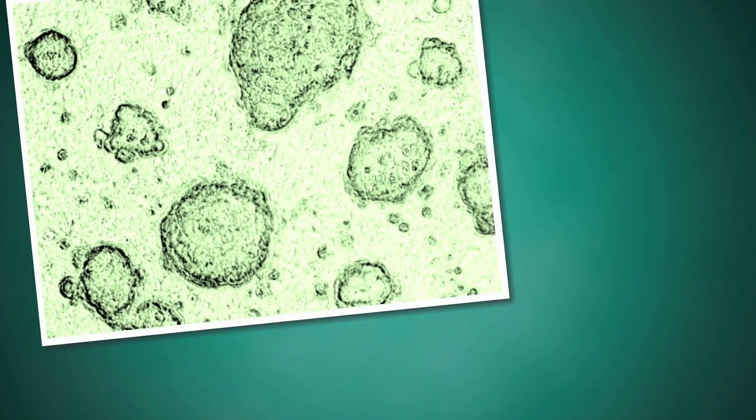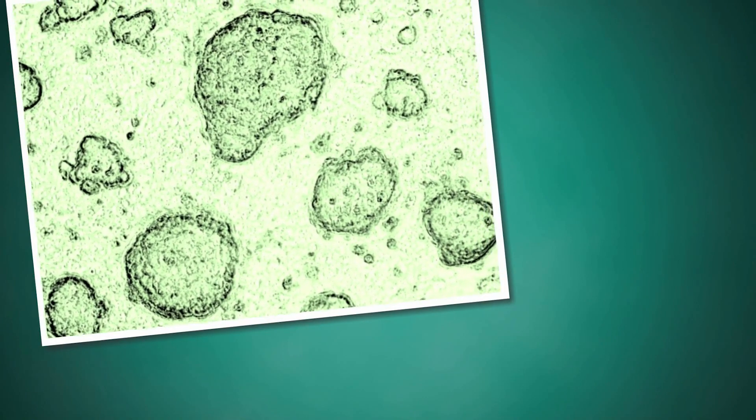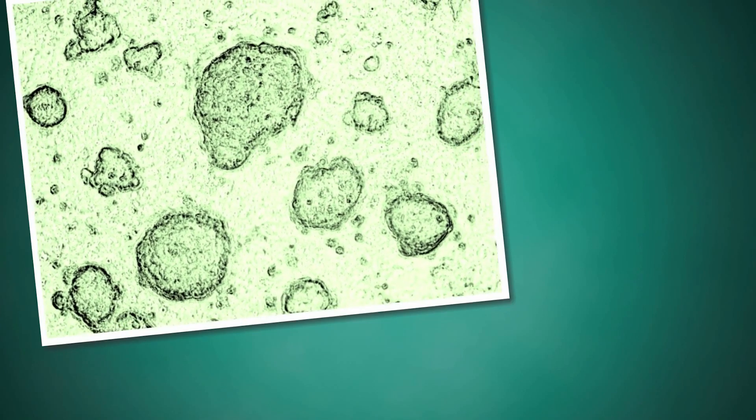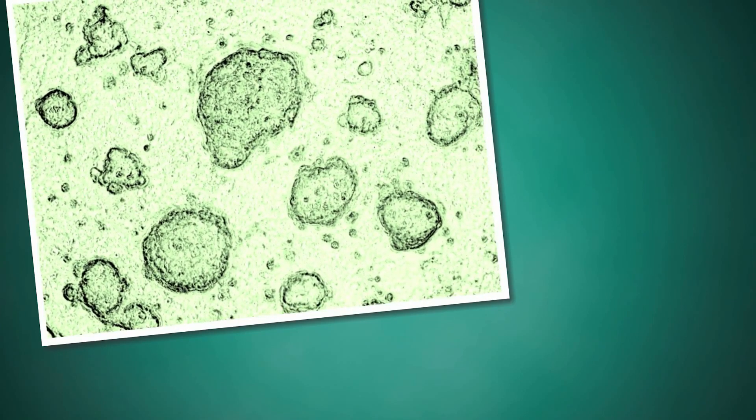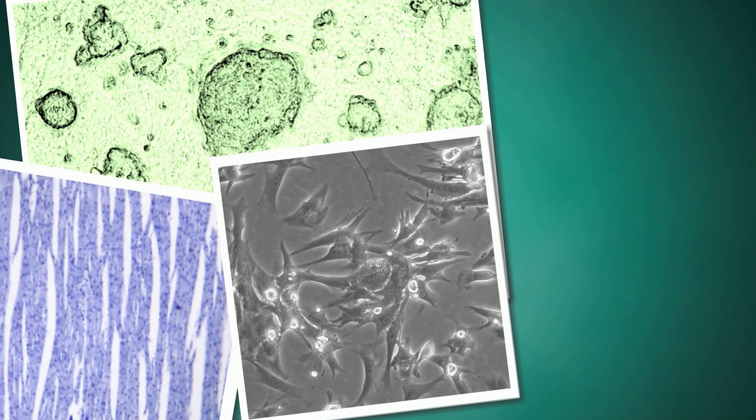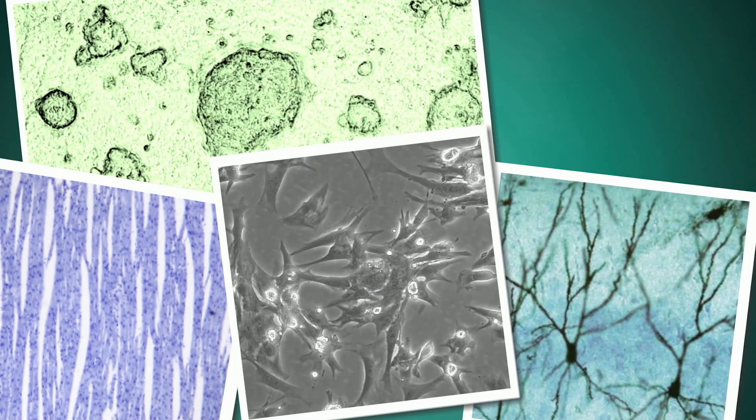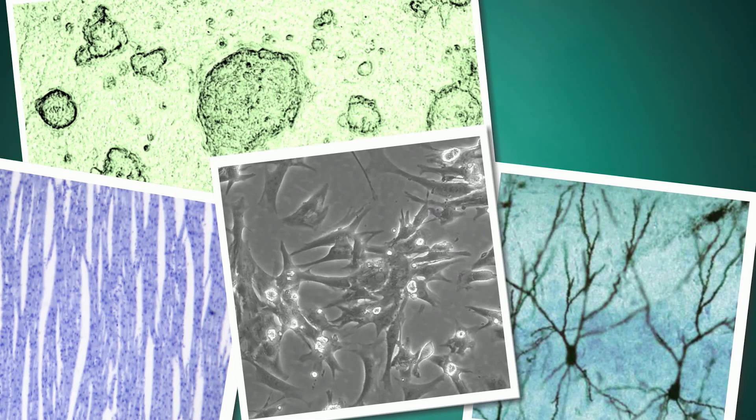Embryonic stem cells and induced pluripotent stem cells live indefinitely in culture, where they can be grown by the millions. By giving these stem cells certain signaling molecules, scientists can differentiate them into beating heart cells, muscle cells, nerve cells, and more. Someday, scientists may transplant differentiated cells like these into patients, where they will grow new, healthy tissue.